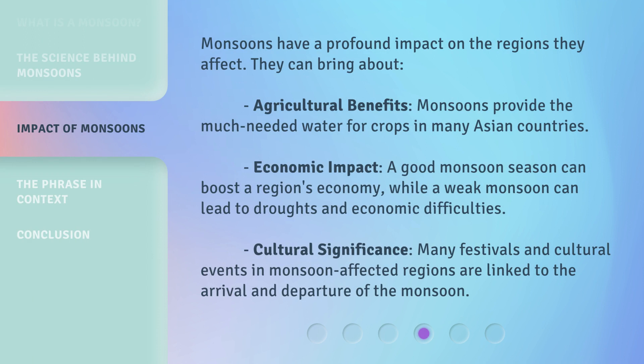Monsoons have a profound impact on the regions they affect. They can bring about agricultural benefits — monsoons provide the much-needed water for crops in many Asian countries. Economic impact: a good monsoon season can boost a region's economy, while a weak monsoon can lead to droughts and economic difficulties. Cultural significance: many festivals and cultural events in monsoon-affected regions are linked to the arrival and departure of the monsoon.